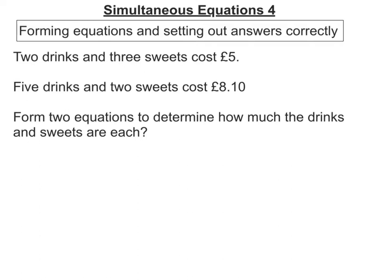So here's our question here. We've got 2 drinks and 3 sweets cost £5. 5 drinks and 2 sweets cost £8.10. Form 2 equations to determine how much the drinks and sweets are each.